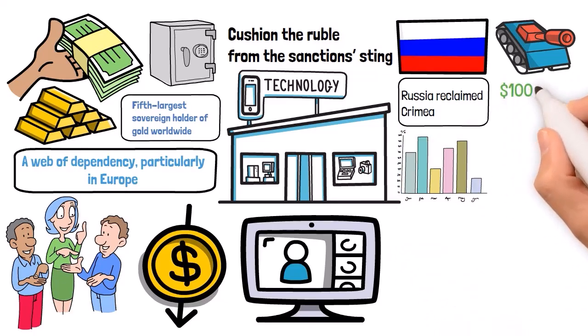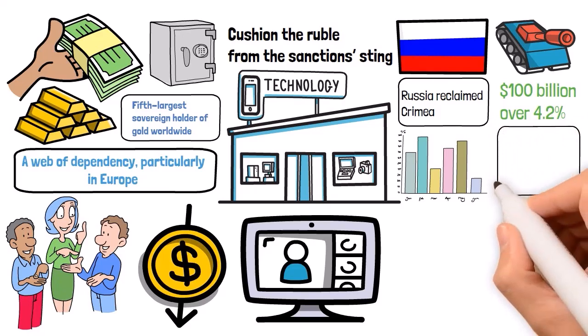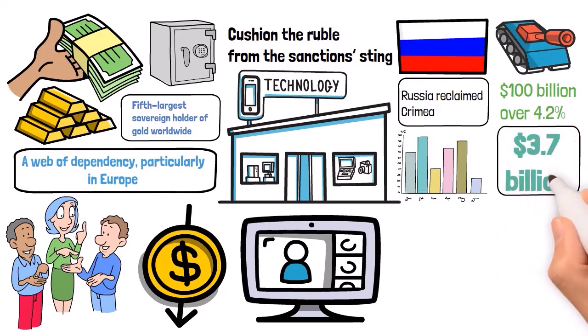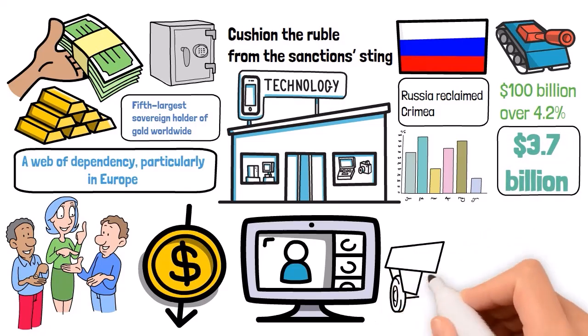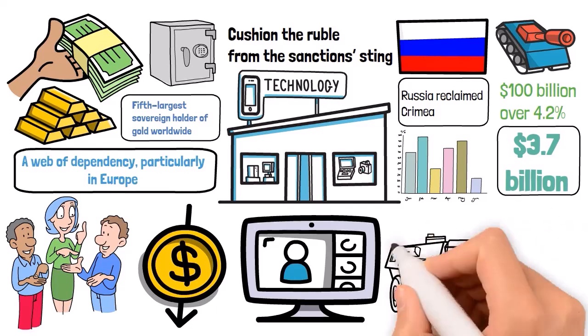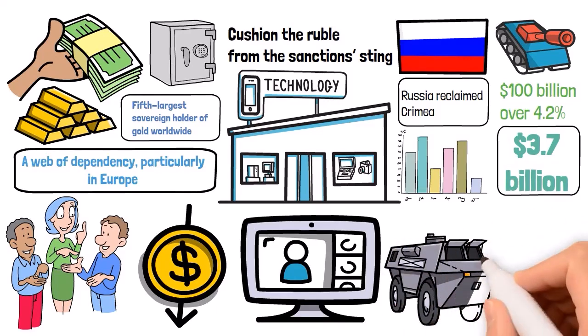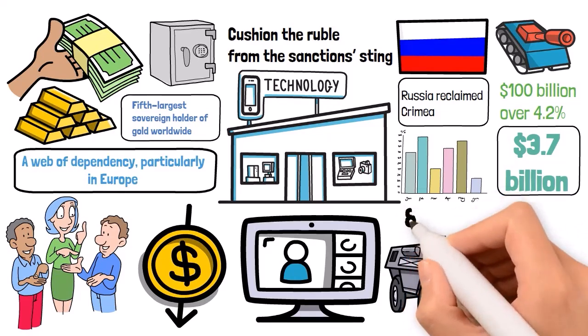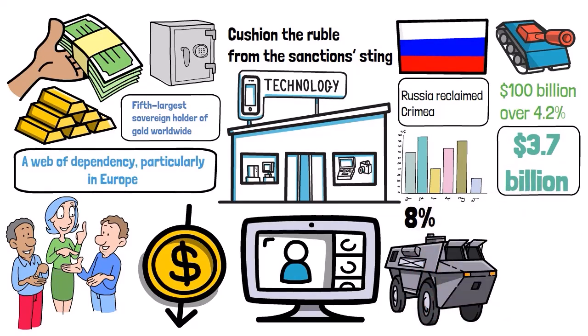The price tag? A staggering $100 billion, over 4.2% of Russia's GDP at the time. But the Kremlin didn't just absorb the blow, it fought back, pouring billions into Crimea's infrastructure, including a $3.7 billion bridge connecting the peninsula to mainland Russia. Sanctions aimed to isolate Russia economically, but they also spurred domestic resilience. Russia's response was multifaceted, from boosting local industries to finding alternative markets. Yet the sanctions bite was sharp, with estimates suggesting they could add up to losses of 8% of GDP. The ruble's value plummeted and foreign investment retreated as the economic landscape shifted beneath Russia's feet.